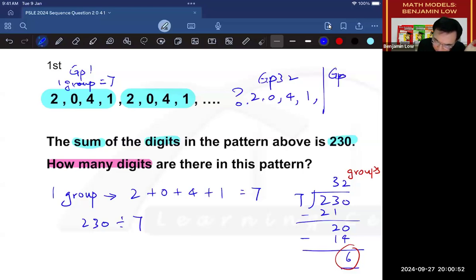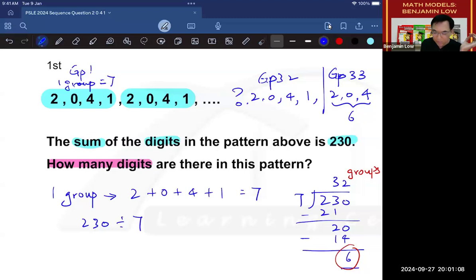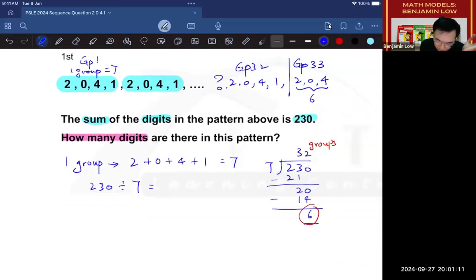And then in group 33, we will have 2, 0, 4. There is no 1 because 2, 0, 4, 2 and 4 add up to already a 6. And the 6 that you are looking at here matches the 6 that is here. So to have a complete working, we are going to write 32. Now this number comes from here, 32 groups. So that's 32 with a remainder of 6. This 32, as we know, is groups and the 6 is value.